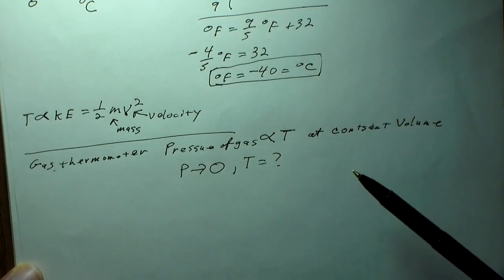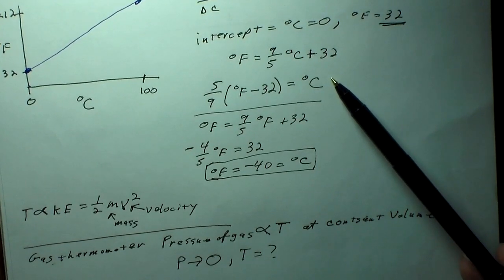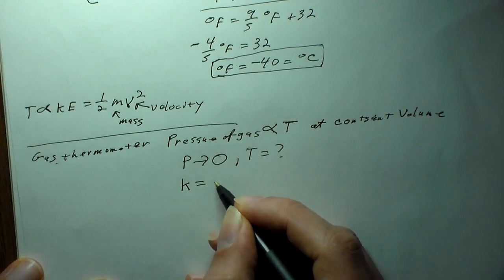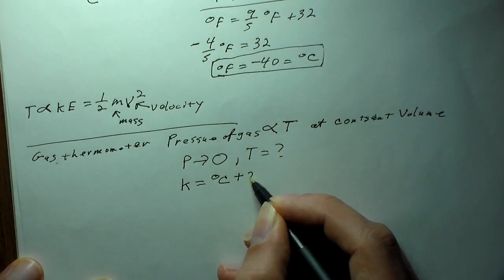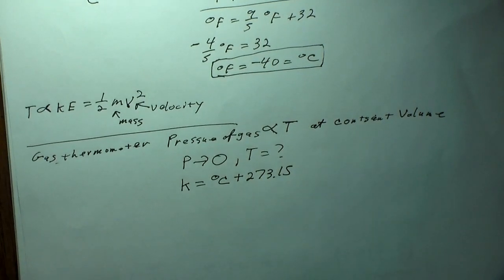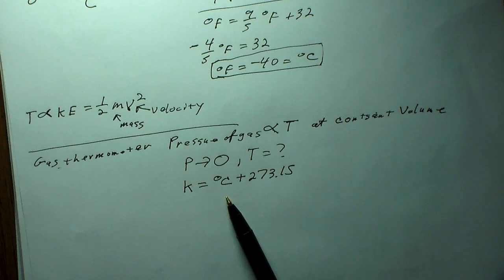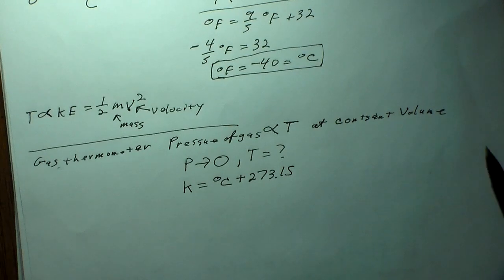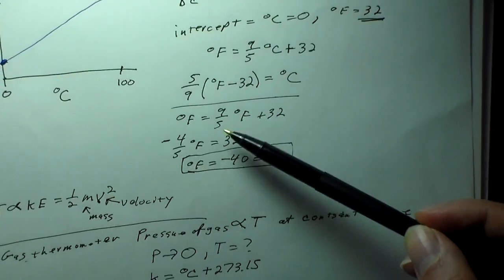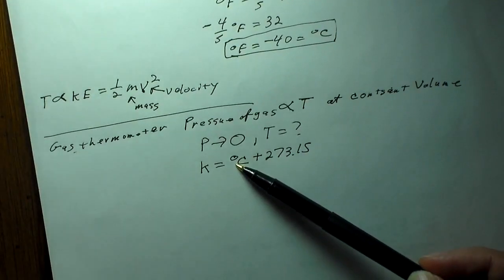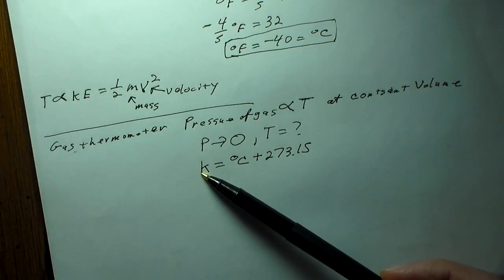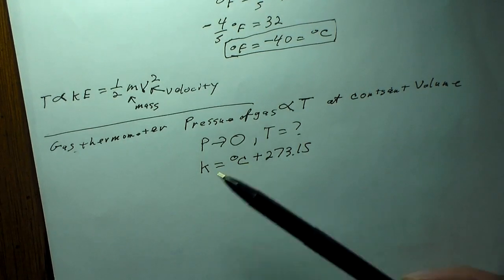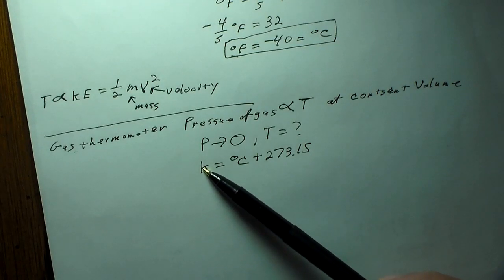What they did was take the Celsius temperature ranges and put an offset onto them, devising a new temperature scale known as the Kelvin scale. The Kelvin scale equals degrees Celsius plus 273.15. So zero degrees Celsius is equal to 273.15 Kelvin. Also note: Kelvin doesn't have a degree sign — you say '273.15 Kelvin' but 'zero degrees Celsius.'